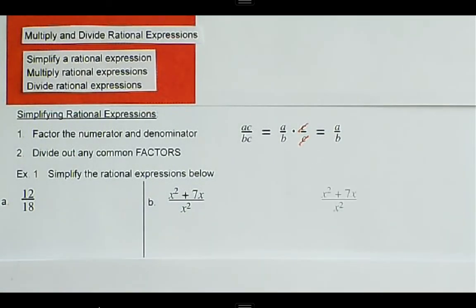So then we're just left with a over b. So we want to be able to do that process.